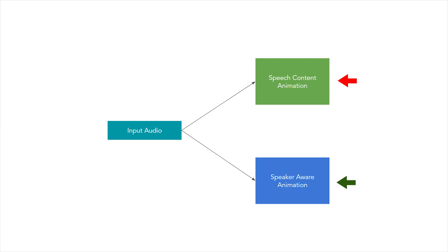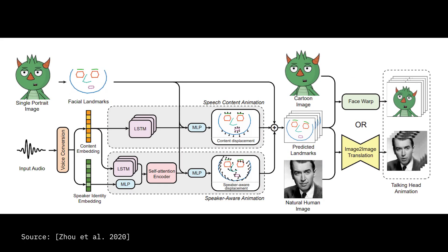This disentanglement leads to the realism in the head movements that we see in these videos and helps them outperform some of the other techniques that we have seen before. What an excellent idea! The pipeline contains two main modules. One is the speech content animation that is responsible for synchronizing the jaw, the lip, and the nearby face regions with the input speech content in the audio file.